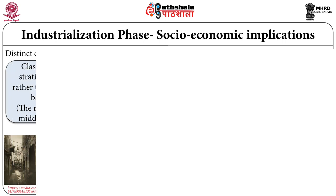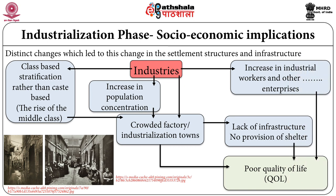The socio-economic implications of the industrial revolution included distinct changes: class-based stratification emerged rather than caste-based, and the rise of the middle class took place. There was an increase in population concentration near crowded factories. Industrial towns came up with more industrial workers, but despite employment opportunities, there was a lack of facilities, infrastructure, no provision of shelter, and ultimately a poor quality of life.